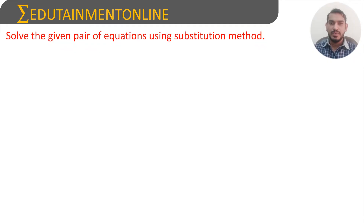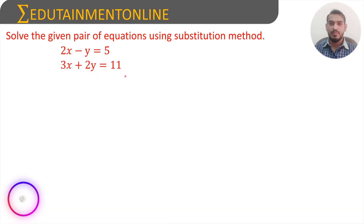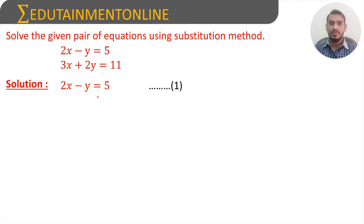Solve the given pair of equations using the substitution method. The first equation is 2x minus y equals 5, and the second equation is 3x plus 2y equals 11. Considering 2x minus y equals 5 as equation 1 and 3x plus 2y equals 11 as equation 2.